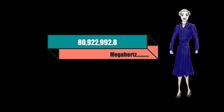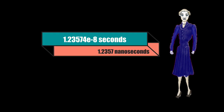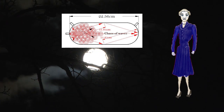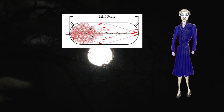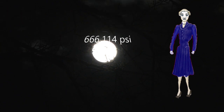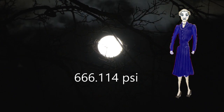The frequency would be 80.9229 megahertz, with a wavelength of 1.2357 nanoseconds. This seems absurd, but knowing that mechanical waves — many waves cancel by opposing energy and never reach the walls of the chamber — perhaps the empirically calculated value of 666.114 PSI is this sum.